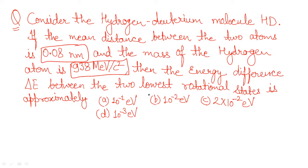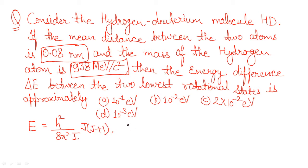To find the energy difference, you first need to know the energy expression for rotational states. The formula for rotational energy is: E = h²/(8π²I) · J(J+1), where J is the rotational quantum number and its values start from 0, 1, 2, 3, and so on. We need the difference between the two lowest rotational states, which means J = 0 and J = 1.